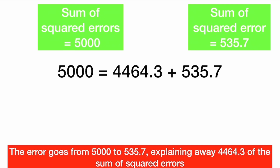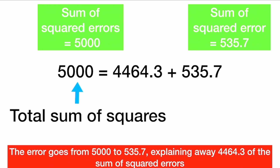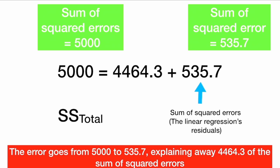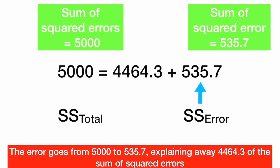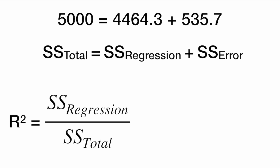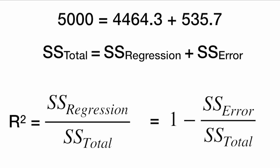We can break down this equation further and say the 5,000 total has two components: the remaining sum of squared errors from our regression line (535.7), and the other 4,464.3 squared errors that were explained. We call the 5,000 the total sum of squares — SS total. The 535.7 is the sum of squared errors, the squared residuals from linear regression added together — the SS error. And the 4,464.3 that we explained away is the SS regression. The SS total breaks down into SS regression plus SS error. This gives us formulas for R-squared: it equals SS regression over SS total, or equivalently, 1 minus SS error over SS total.